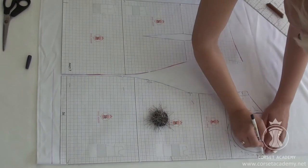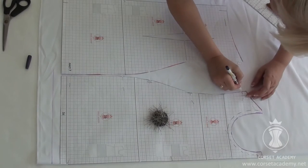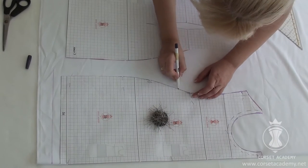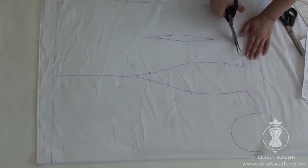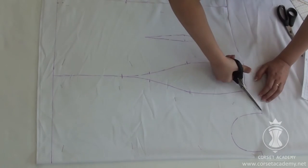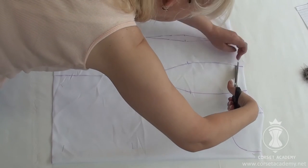I trace the contours of the pieces with a disappearing ink pen. And I cut them all out and make notches. Don't forget the notch at the end of the zipper.